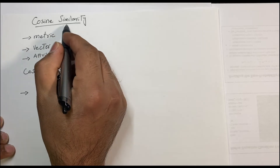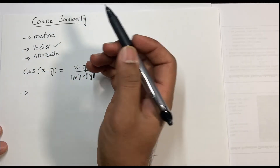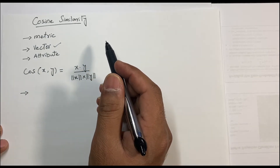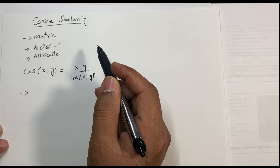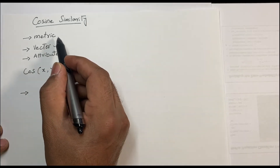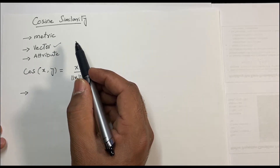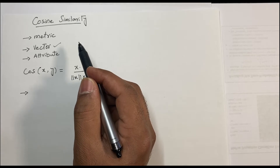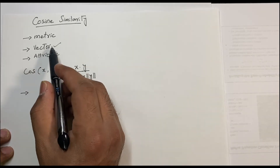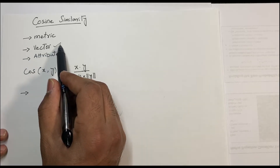In this video you will learn cosine similarity — what it is, how it works, and how to compute cosine similarity of documents. Cosine similarity is a metric used to measure how similar documents are, irrespective of their size. In cosine similarity, we treat each object as a vector.